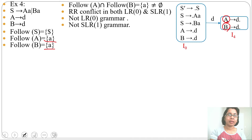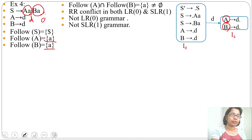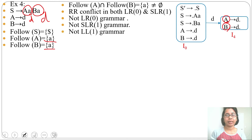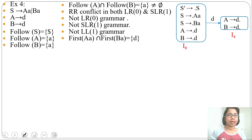The grammar is not LR0 as reduce-reduce conflict is present. The grammar is not SLR1 as reduce-reduce conflict is present. Now check whether this is LL1 or not — this is not LL1 as FIRST of one production will be {d} and FIRST of the other will also be {d}; there is a common element, so this is not an LL1 grammar.